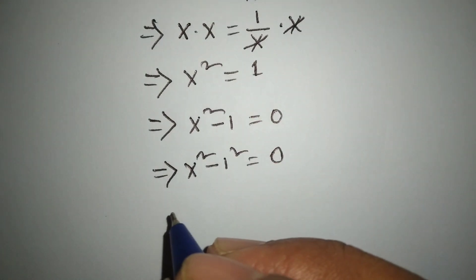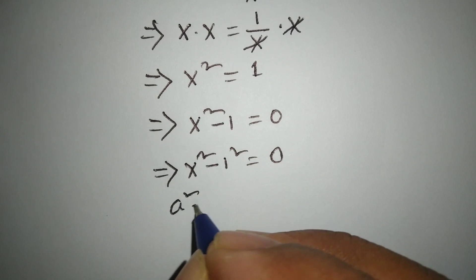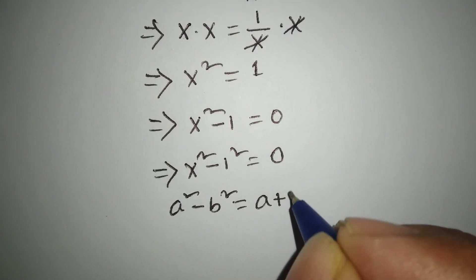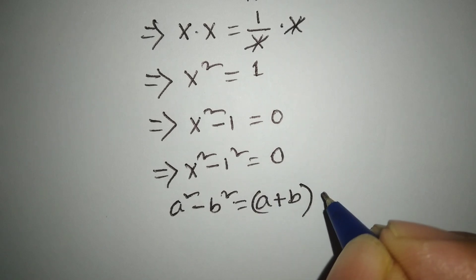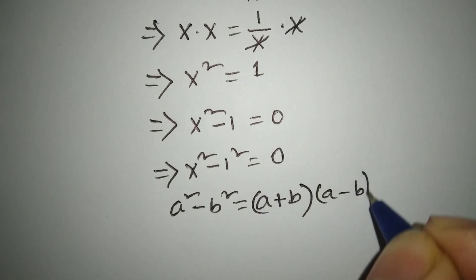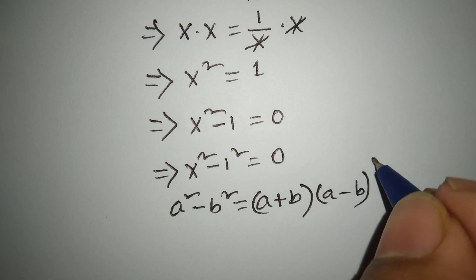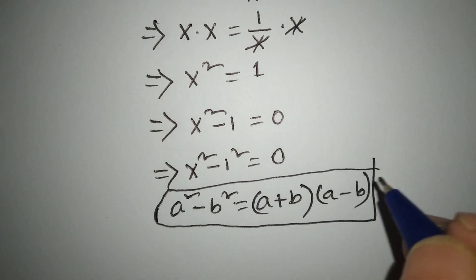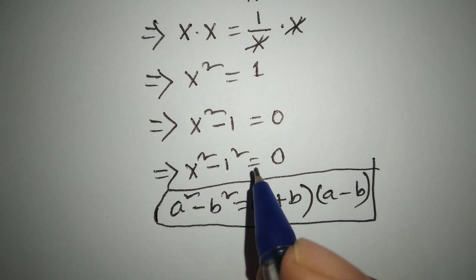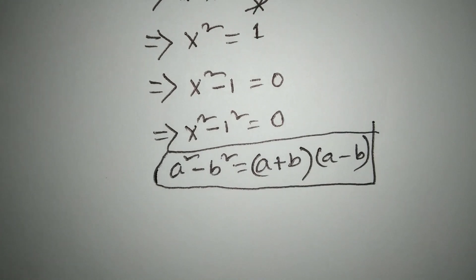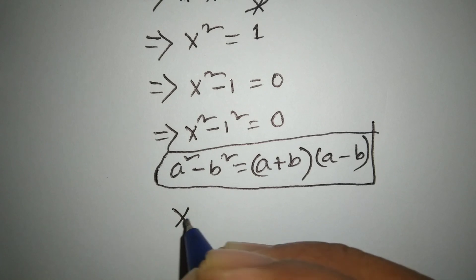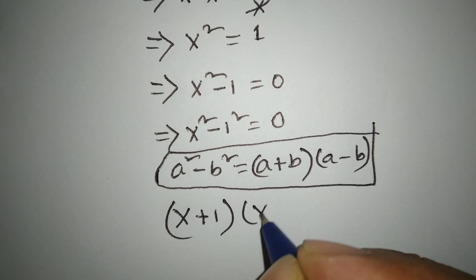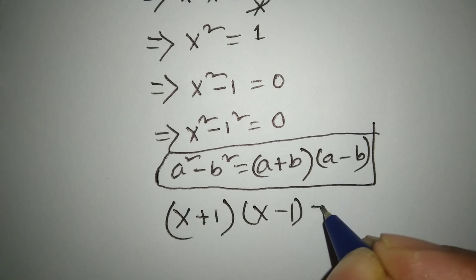We know a squared minus b squared equals a plus b times a minus b. According to this formula, we can write this line as x plus 1 times x minus 1 equals 0.